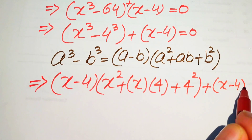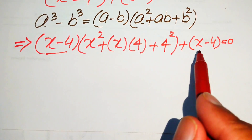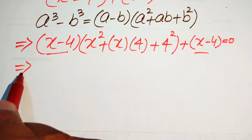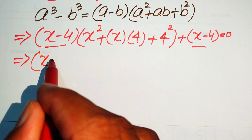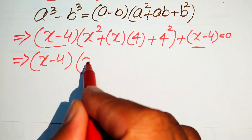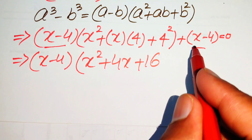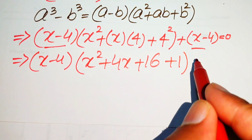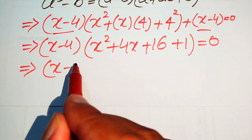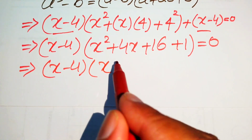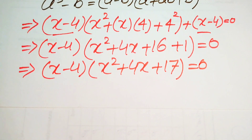So we have x minus 4 times x squared plus 4x plus 16, plus x minus 4 equals 0. We see that x minus 4 is the common term in both parts, so we factor it out. After taking x minus 4 common, we get x minus 4 times x squared plus 4x plus 16 plus 1 equals 0, which simplifies to x minus 4 times x squared plus 4x plus 17 equals 0.